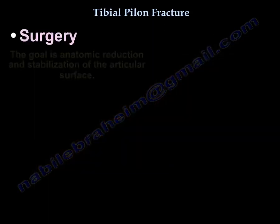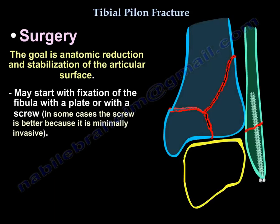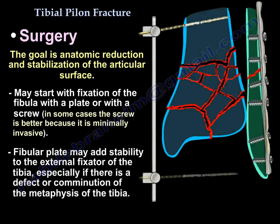The surgical goal is anatomic reduction and stabilization of the articular surface. You may start with fixation of the fibula with a plate or with a screw — in some cases the screw is better. A fibular plate may add stability to the external fixator of the tibia, especially if there is a defect of the metaphysis of the tibia.